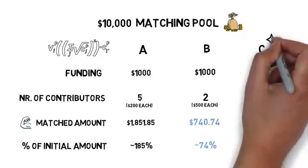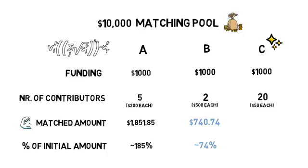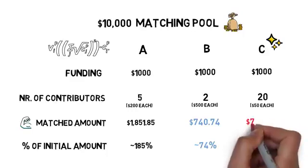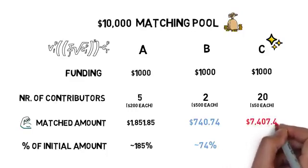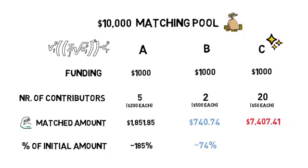Now, here comes the magic. Project C received a whopping $7,407.41 of matched funding, which is 740% of the initial amount contributed.